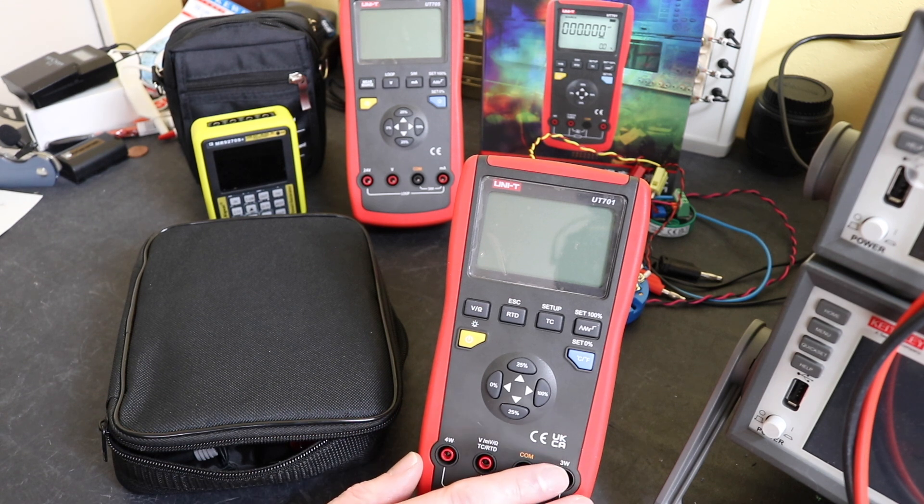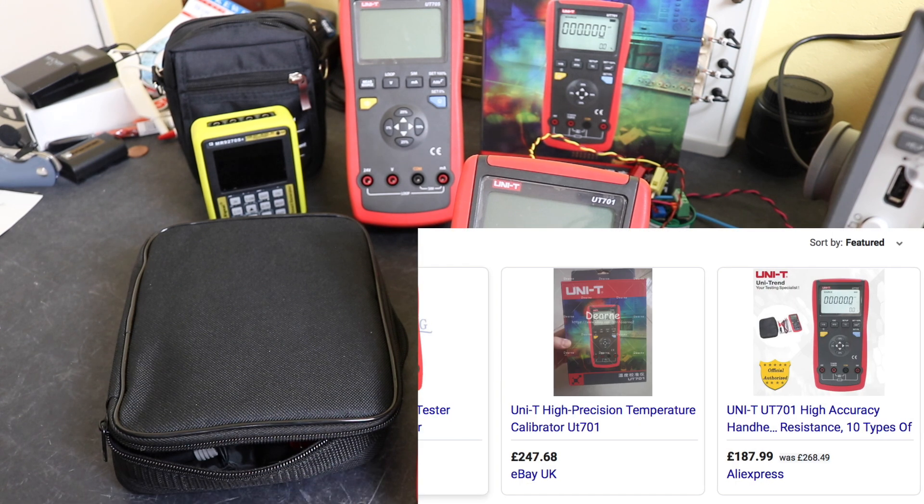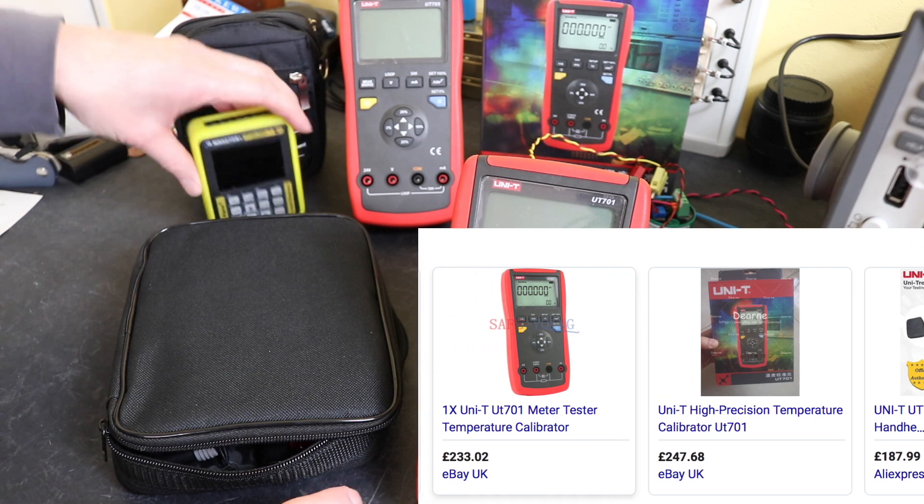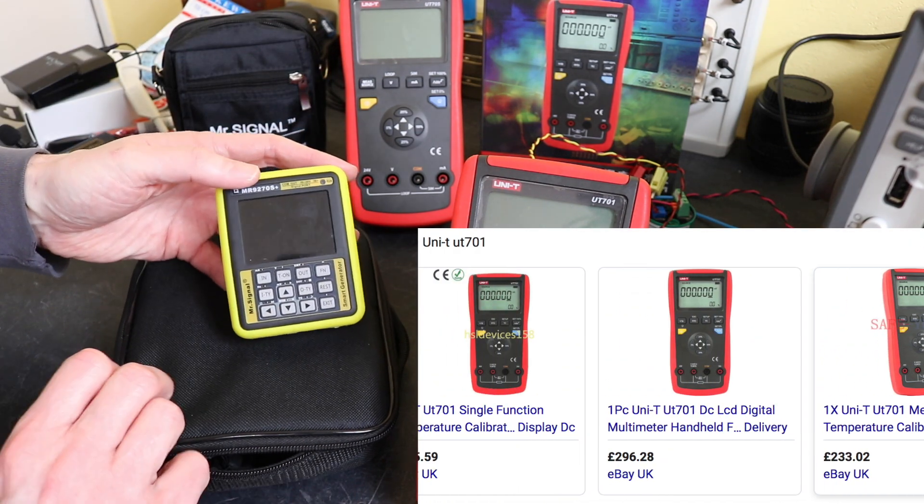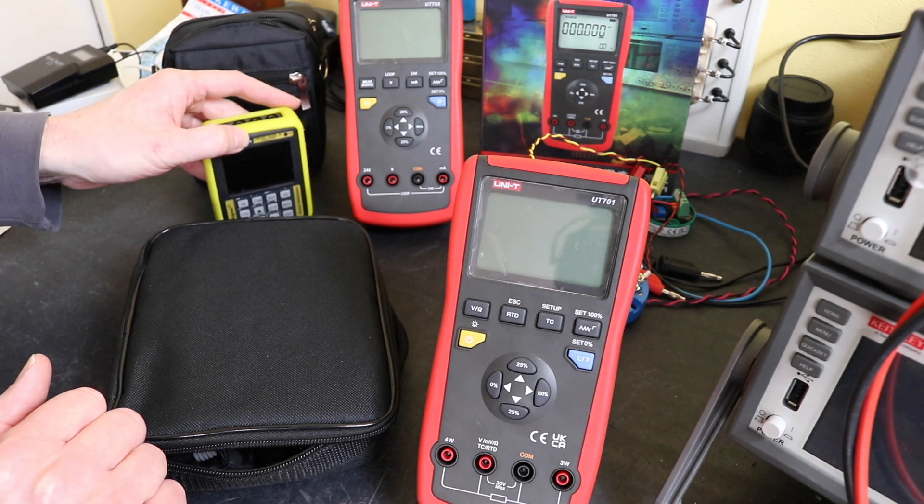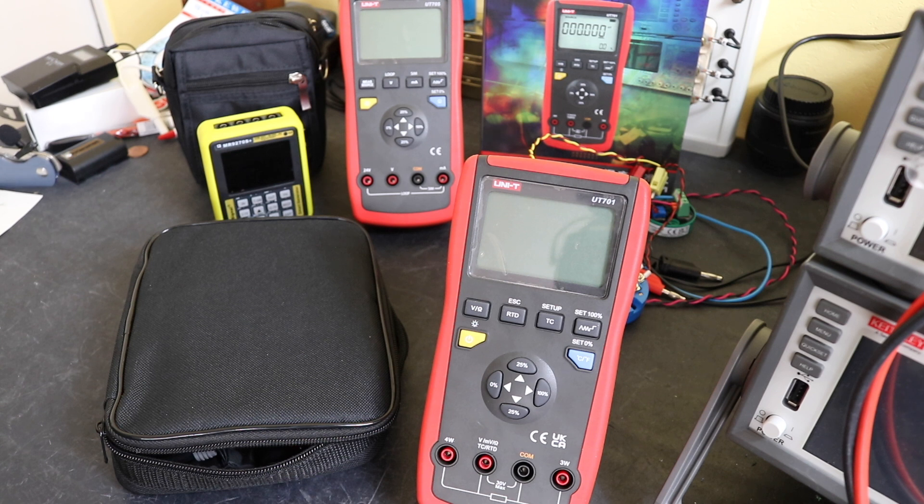Obviously the cost does go up as you go through these units. These units here are priced around about £200. I picked this one up for £186 off AliExpress which incidentally is about the same price as the MR9270S. If you shop around you can get this for a couple hundred as well. So the price of these two units is under a little bit of stress really. They've got something to prove against the MR9270S there.